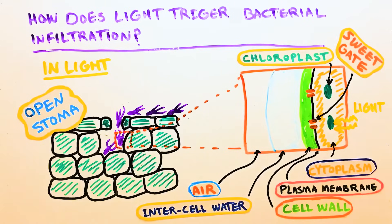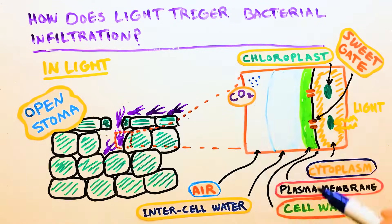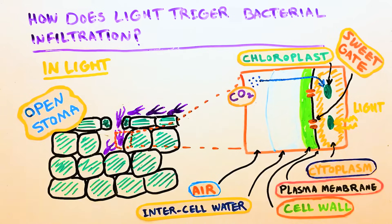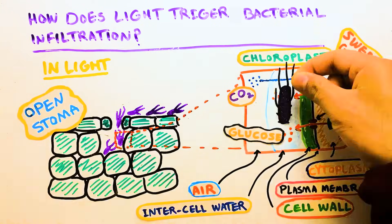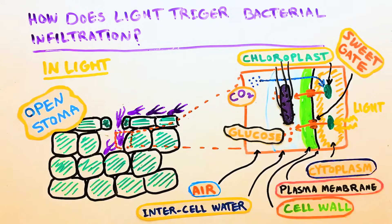Light exposure triggers chloroplasts to make sugar out of carbon dioxide diffused into the cytoplasm. The sugar then diffuses out of the plant cell into the intercellular water. Bacteria can sense the sugar concentration gradients inside the leaf and actively swim within the intercellular water films toward higher concentrations of sugar and consume it. This directed movement is called chemotaxis.